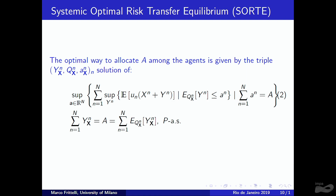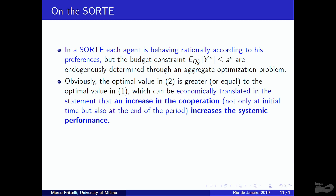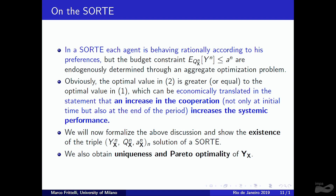By using random allocation, we achieve a larger expected utility than with deterministic allocation. This requires cooperation not only at the initial time but also at the later time — an increase in cooperation increases systemic performance. This is the basic idea; we now formalize it and show existence, uniqueness, and Pareto optimality.